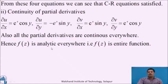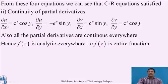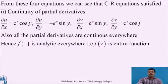The second condition is continuity of all four partial derivatives. We discussed that exponential, sin, and cos are continuous real valued functions, and the product of two continuous functions is again continuous. All four partial derivatives are products of continuous real valued functions, so they are also continuous. Therefore, by the sufficient condition, f(z) is analytic everywhere in the complex plane — f(z) is an entire function.